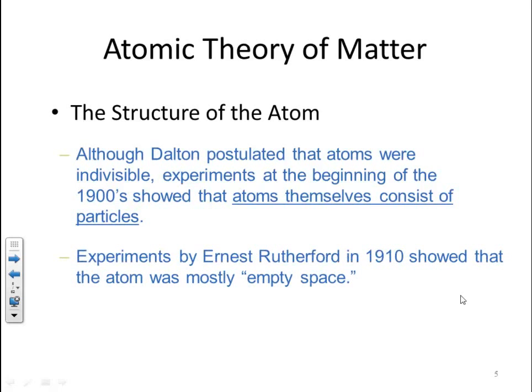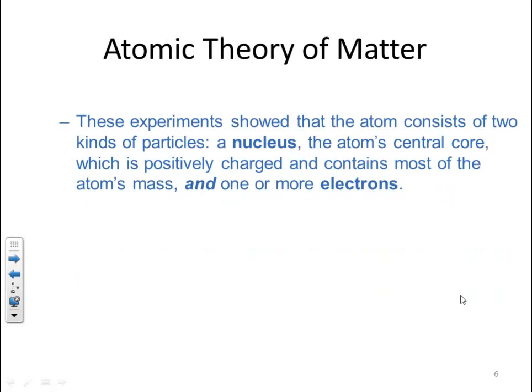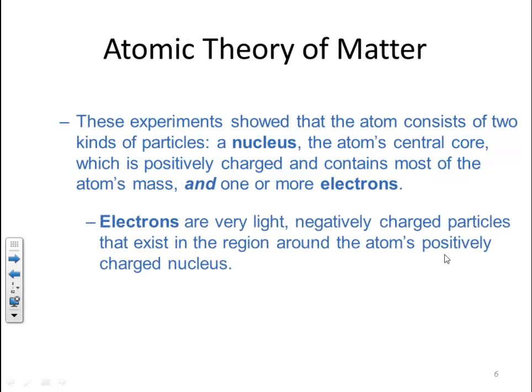Experiments by Ernest Rutherford in 1910 showed that the atom was mostly empty space. These experiments showed that the atom consists of two kinds of particles: a nucleus — the atom's central core, which is positively charged and contains most of the atom's mass — and one or more electrons, which are very light, negatively charged particles existing in the region around the positively charged nucleus.